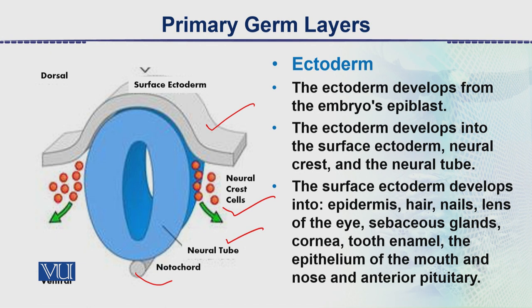The surface ectoderm develops into the epidermis and related structures. These include hair, nails, the lens of the eye, sebaceous glands of the skin, the cornea of the eye, tooth enamel, and the epithelium of the mouth, nose, and anterior pituitary gland. These are all ectodermal in origin. Some organs, such as the adrenal gland, are made from two layers.